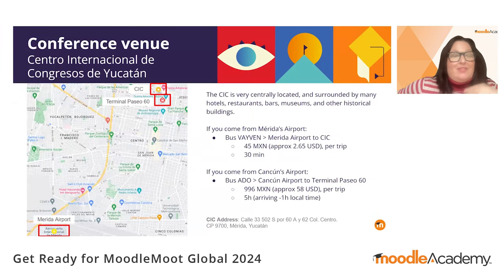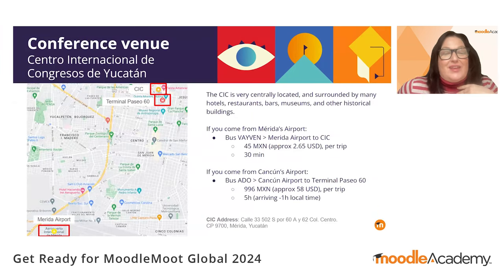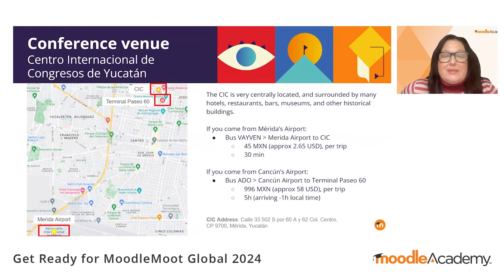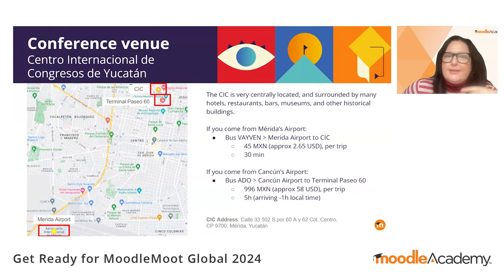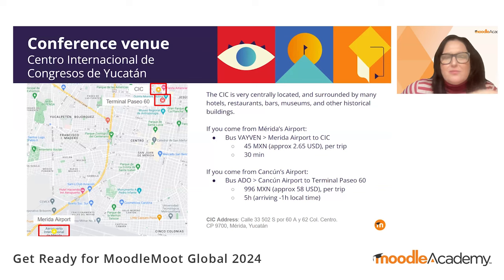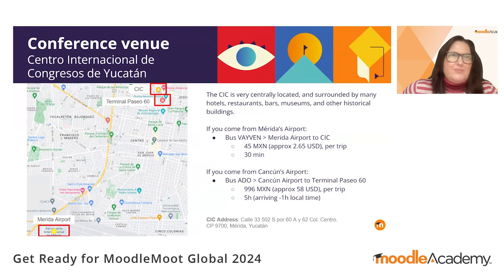The CIC is very centrally located close to the emblematic Paseo de Montejo, one of the main boulevards. It's surrounded by many diverse hotels, delicious restaurants, lively bars, interesting museums, and other historical buildings, all walking distance.